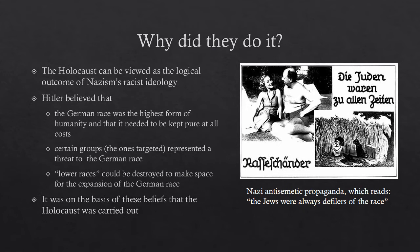Let's look at some of Hitler's beliefs and see how they could lead to genocide. First, Hitler and the other Nazis believed that the German race was the highest form of humanity and that it needed to be kept pure at all costs. By keeping it pure, they meant the German race should not be allowed to mix or breed with other races.